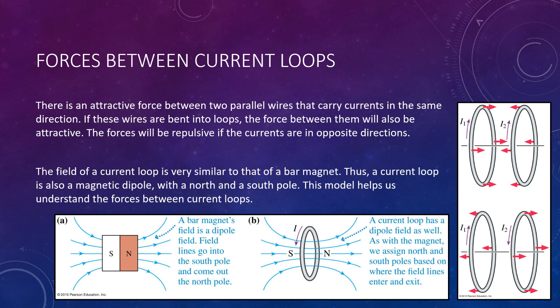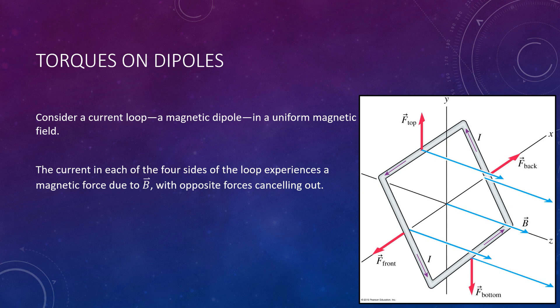Our final discussion before we conclude is a little bit complex, both in the visual diagram and in the work. We're going to go through a derivation of a new equation. It turns out that we are exerting forces on objects, and forces can generate torques — in other words, a rotation of an object. This is no different when we talk about magnetic fields versus topics from Physics 1 where we talk about the torque on a solid object.